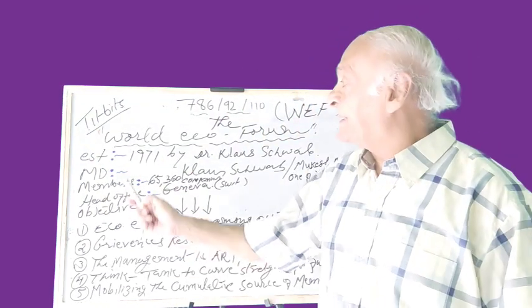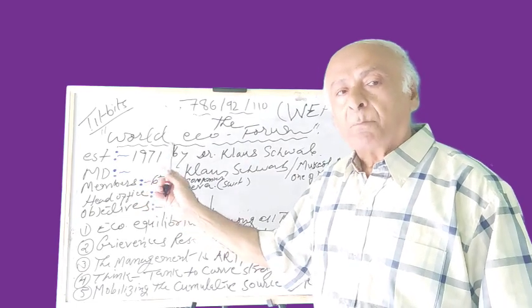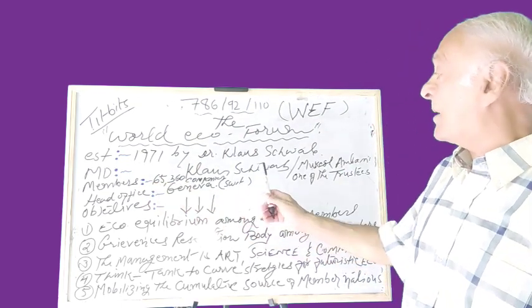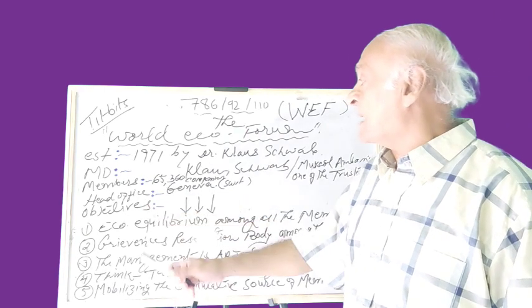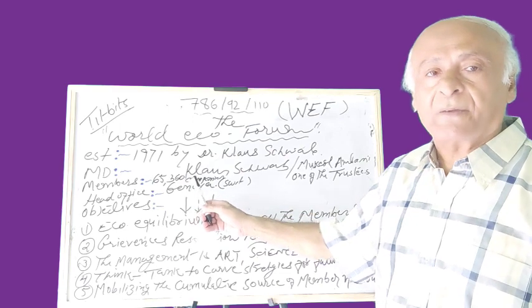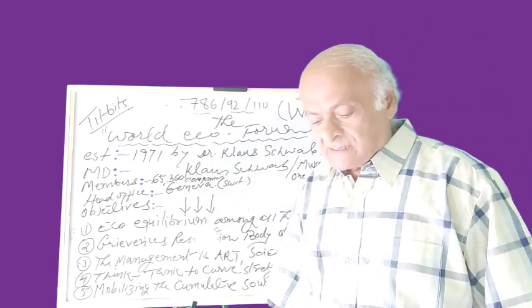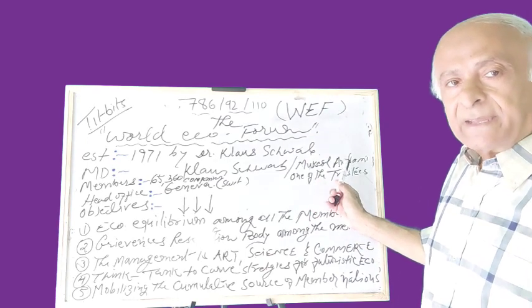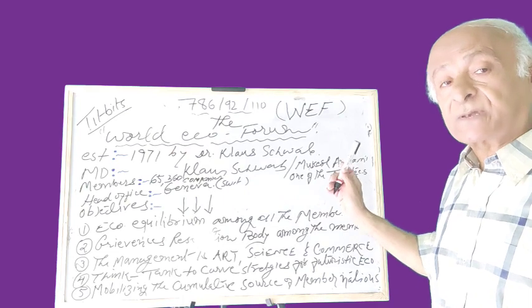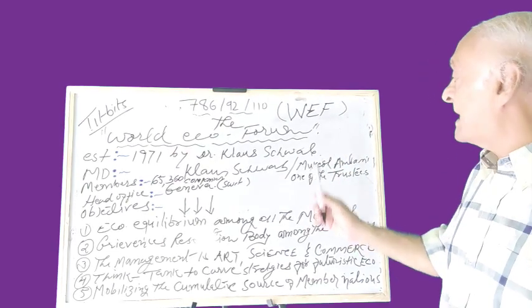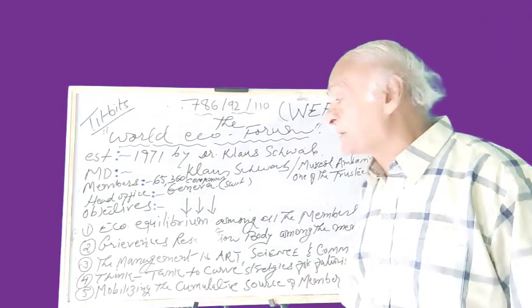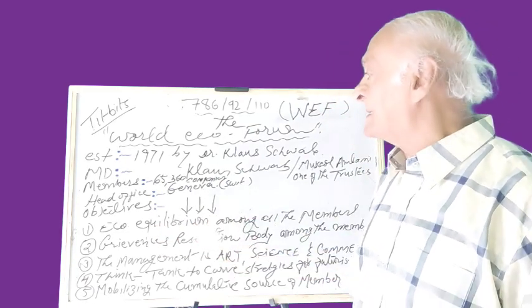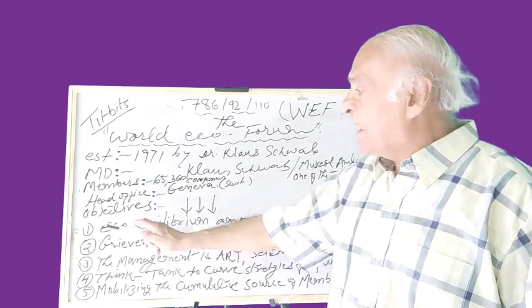Our tidbits: it came into existence in 1971 by Dr. Klaus Schwab. Members are 65 nations and 365 companies. Most important and the most proud moment for us is that Mukesh Ambani is given the chair as one of the trustees, a very valuable position India has been given. Head office is in Geneva, Switzerland, and its objectives are five objectives.